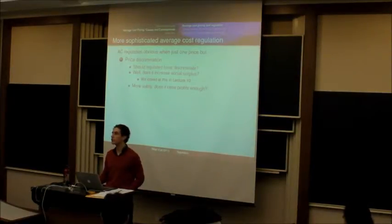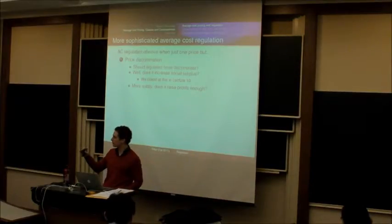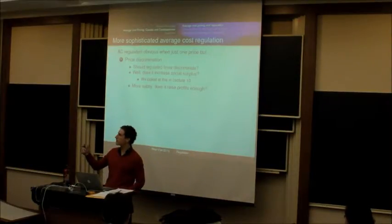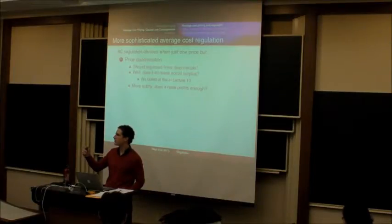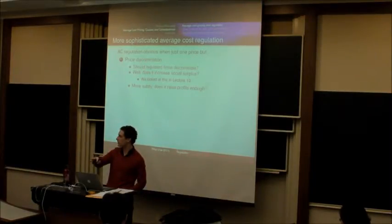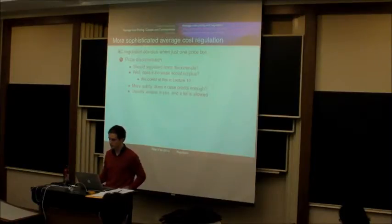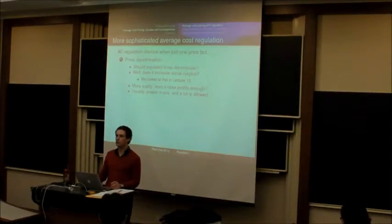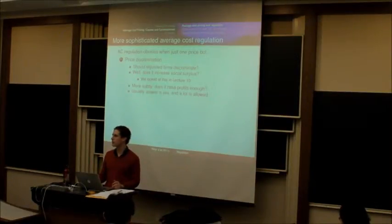The key question is whether that increases or decreases social surplus, which is what we were talking about a week ago. But there's an even more subtle question. We might even be willing to allow it to reduce surplus by a little bit if it raises the profits of the firm. Because if it raises their profits, that means we can lower prices elsewhere. This is one reason why they let them charge so much on long distance so that they could subsidize the local loop. So the usual answer is that price discrimination either increases surplus or it increases profits enough without decreasing surplus too much. And so most of the time, regulated utilities do a ton of price discrimination.